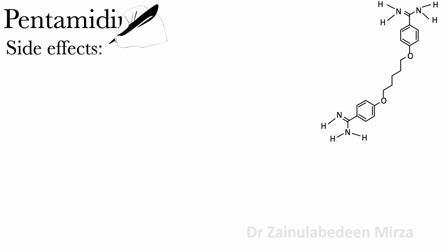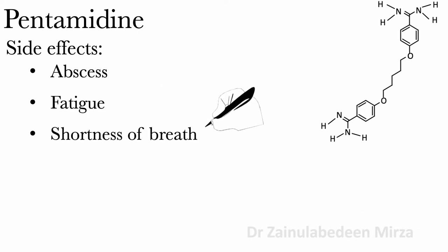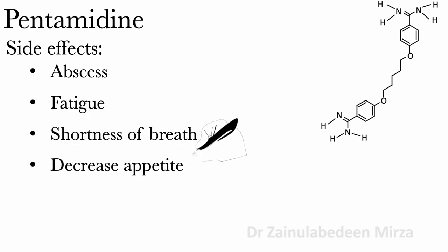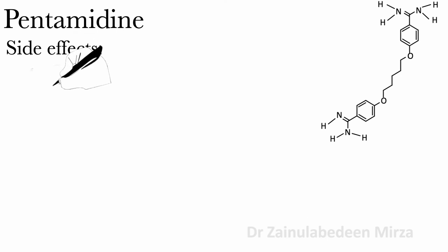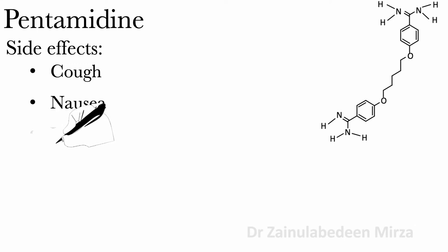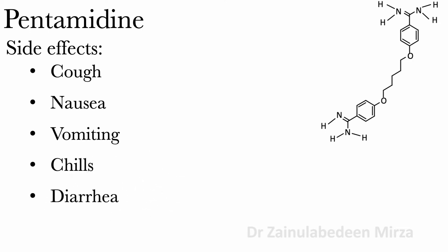Side effects of pentamidine include abscess, fatigue, shortness of breath, decreased appetite, dizziness, rash, cough, nausea, vomiting, chills, diarrhea, and headaches.